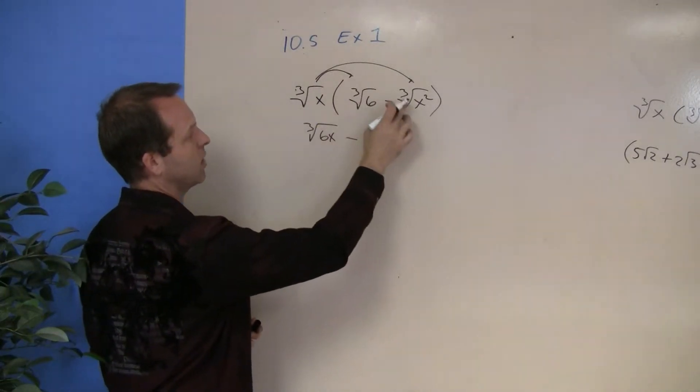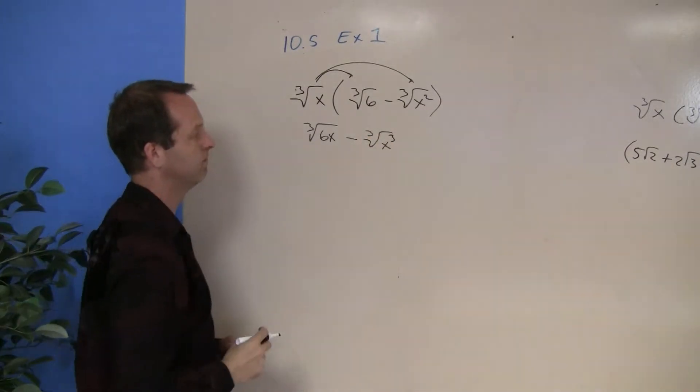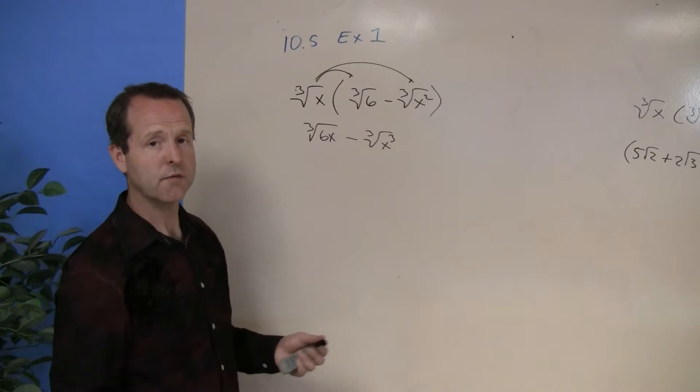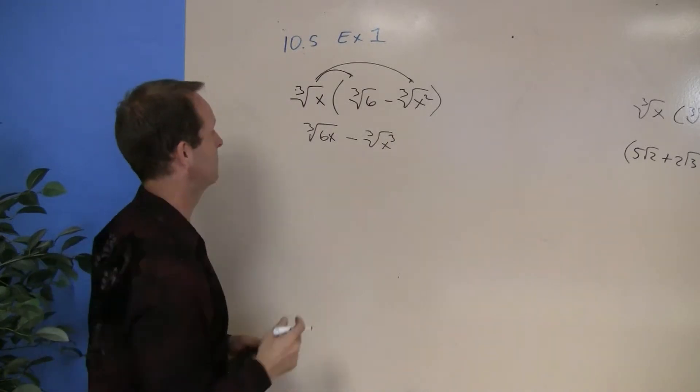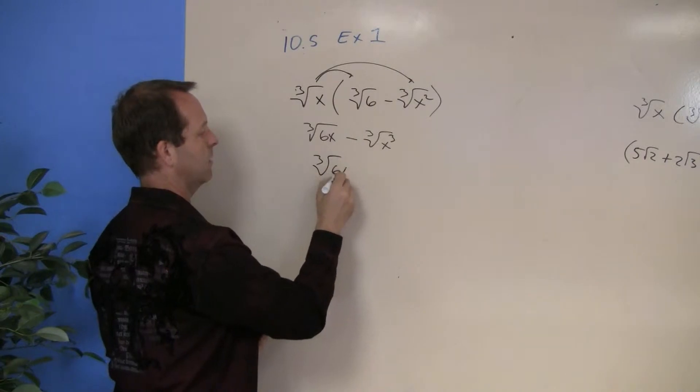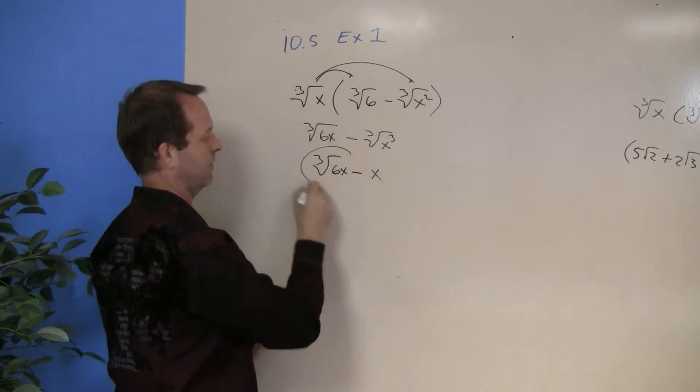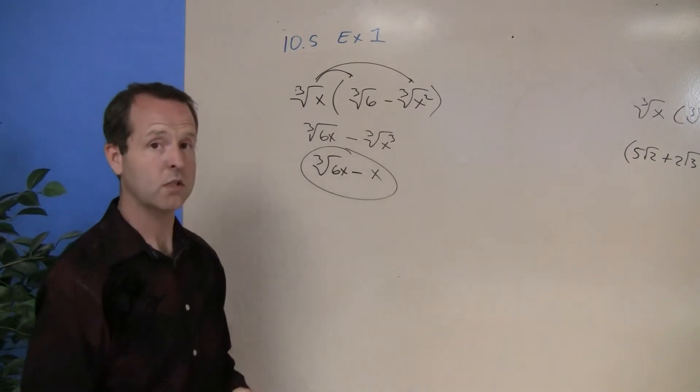Minus the cube root of x times the cube root of x squared, which is the cube root of x cubed. And I'll always look for ways to reduce if possible. The cube root of 6x does not reduce. But the cube root of x cubed is an x. And so there's my final solution there.